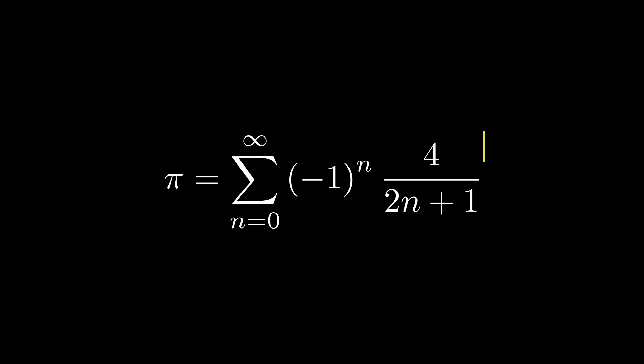So there you have it. We derived Euler's identity and pi using the concept of Taylor series polynomials.